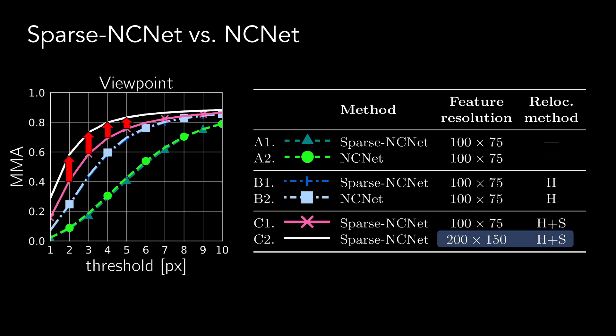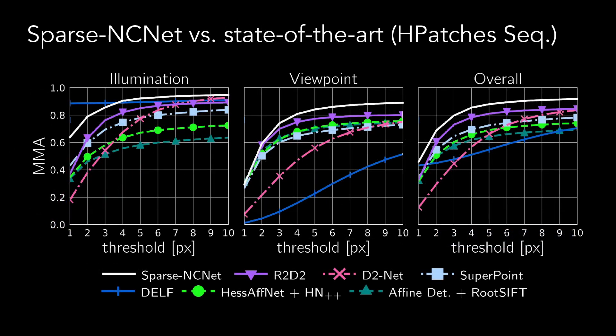Finally, Sparse NC-Net can be run with a finer feature grid of 200 times 150, which was not possible with NC-Net due to the high memory requirements. This final approach produces the best performance. When compared to other state-of-the-art methods in the H-Patches sequences benchmark, Sparse NC-Net obtains the best results for the viewpoint sequences and overall.